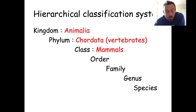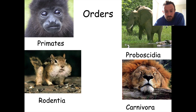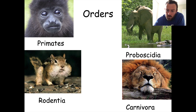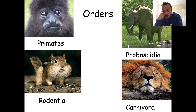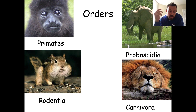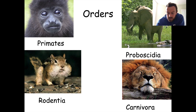So what about within the mammals? Within the mammals we have various different orders — for example primates, which is the group that we are in. We also have things like Proboscidea, which includes elephants, Carnivora, which includes both canines and felines — so cats and dogs — and Rodentia. So we're in the primate order; what about within that?